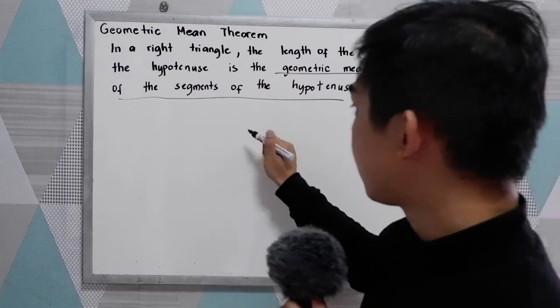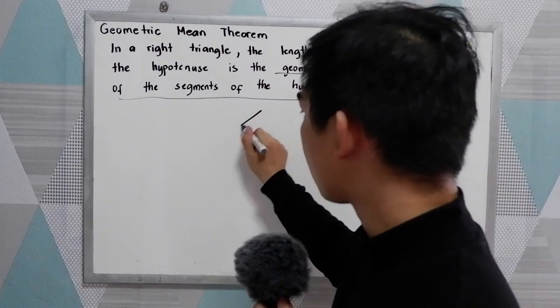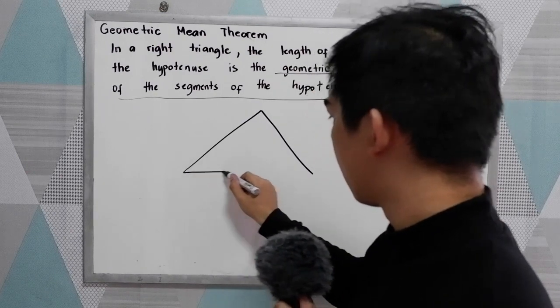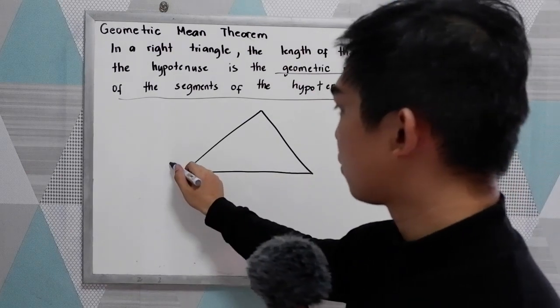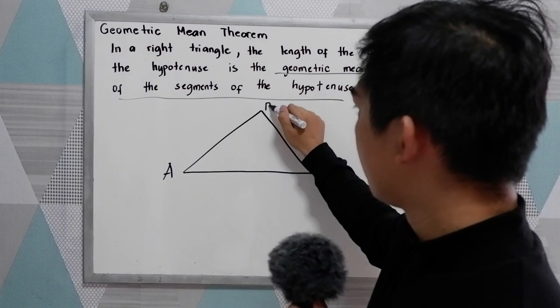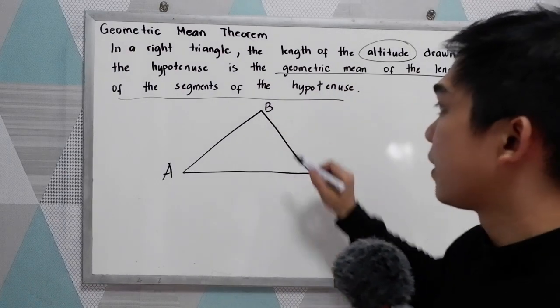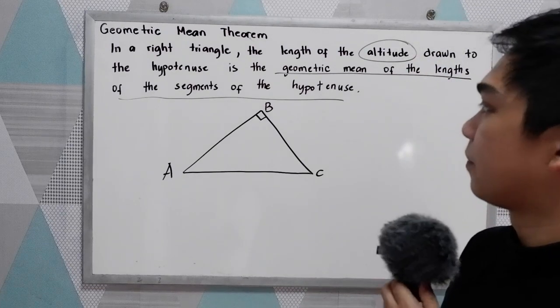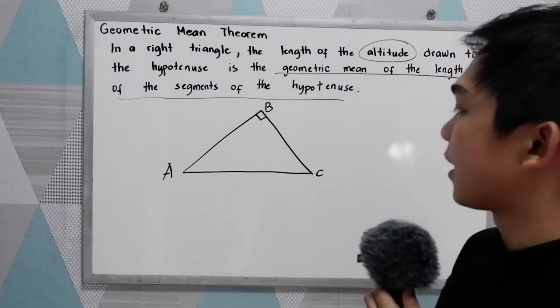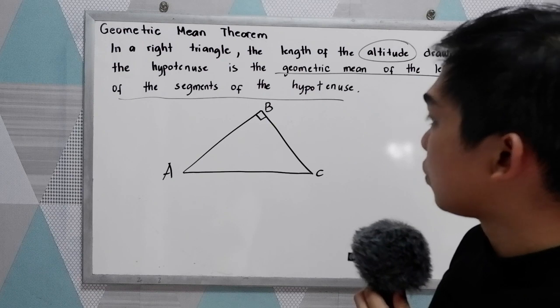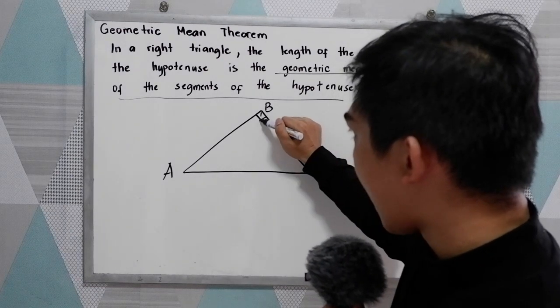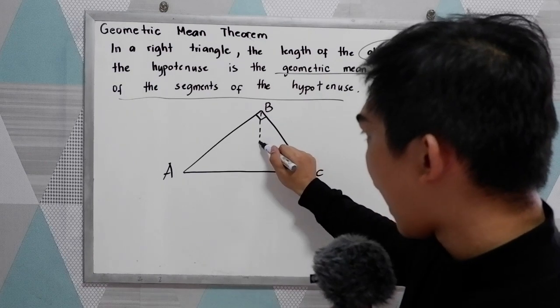To illustrate, let's say we have our right triangle. Let's say we have triangle A, B, C, and this is our 90 degree angle, or the right angle. Now, to get the altitude, we need to connect from the 90 degree angle going to the hypotenuse.